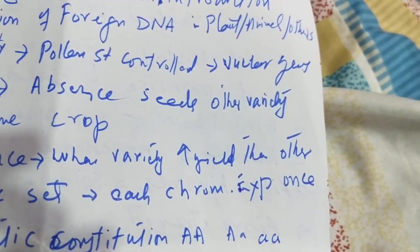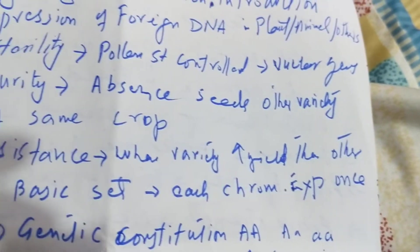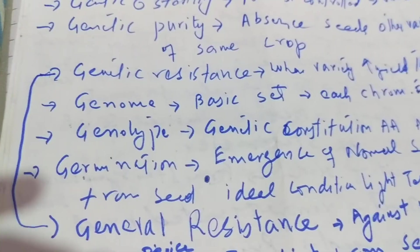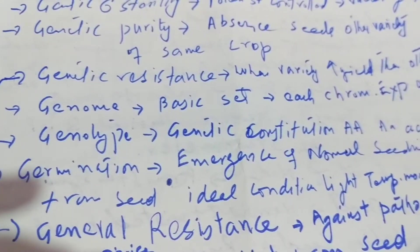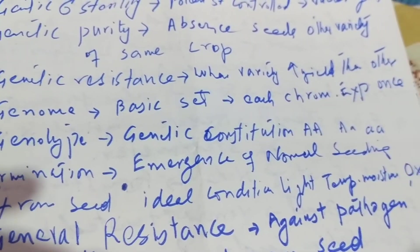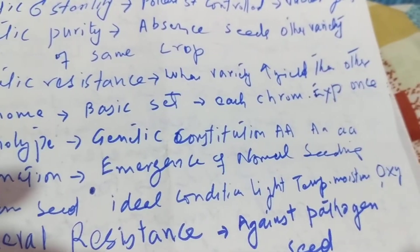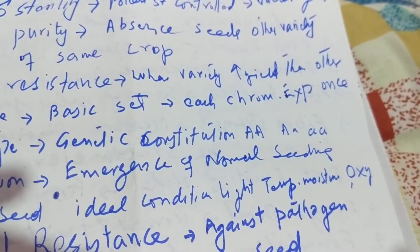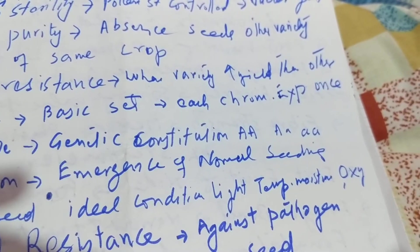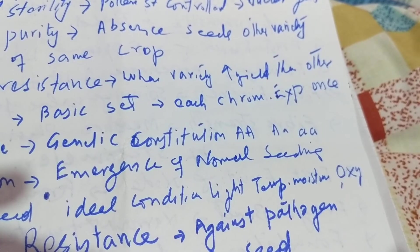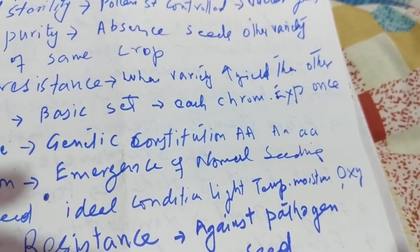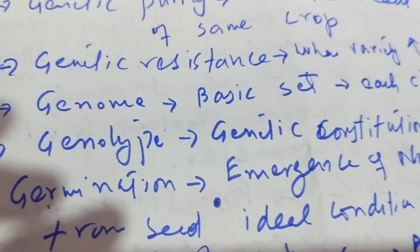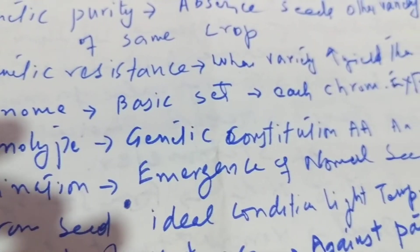Genetic male sterility is when pollen sterility is controlled by nuclear genes. Genetic purity is the absence of seeds of other varieties of the same species. Genetic resistance is when a variety shows increased yield or tolerance compared to others. Genome refers to having a basic set of chromosomes.